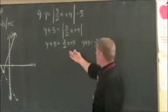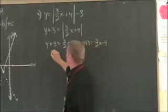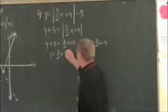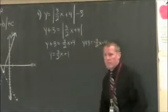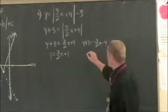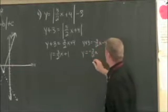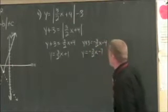Now I want to get this in y equals mx plus b form, so subtract 3 from both sides. That's 3 halves x. If I subtract 3 from here, that's plus 1. Take care of this one, subtract 3. That's y equals negative 3 halves x. Subtracting 3 is going to give me minus 7.